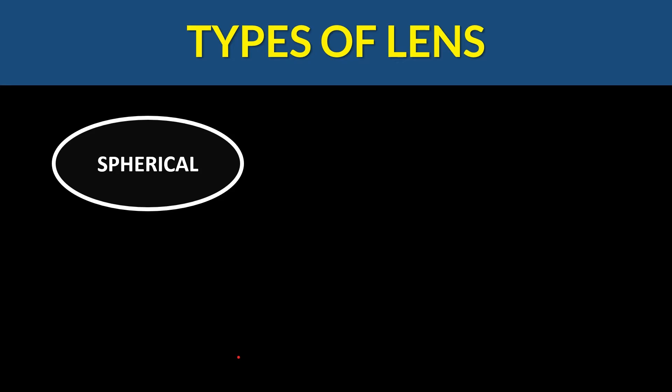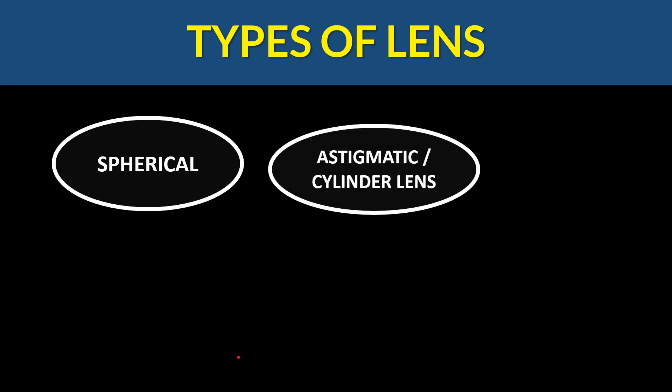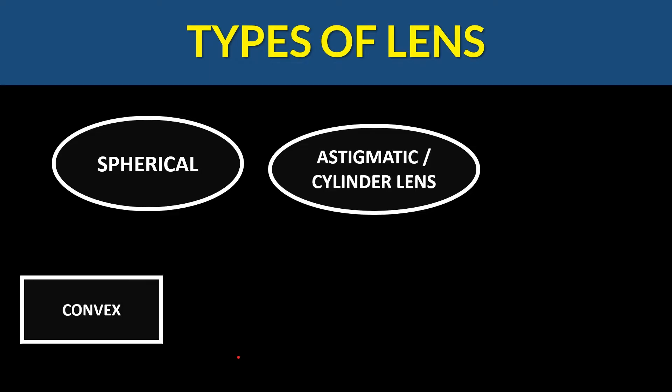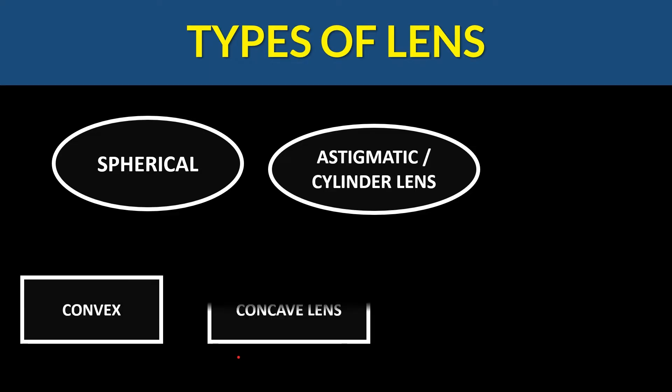The various types of lenses we are going to learn to identify in this video are the spherical lens and the cylindrical lens, also known as the astigmatic lens. The spherical lens is of two types: the convex spherical lens and the concave spherical lens. We shall be studying how to identify these lenses by various methods.